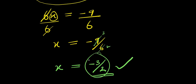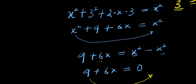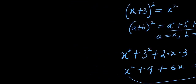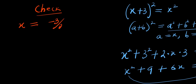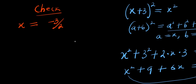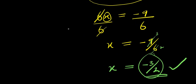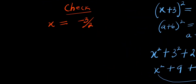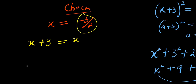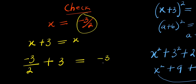Now this becomes our answer, so what we are going to do will be to check if that particular value of x will satisfy this equation. We have x equals negative 3 divided by 2. So let's recall the problem, which is x plus 3 equals x. We will substitute this for x: we will have negative 3 divided by 2 plus 3 — is it the same thing as negative 3 divided by 2?